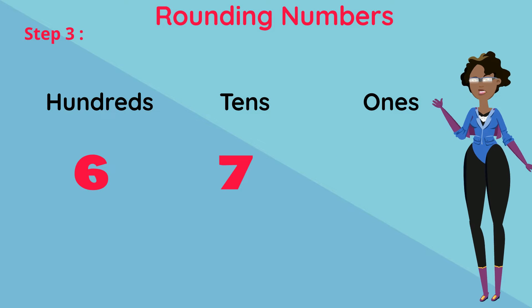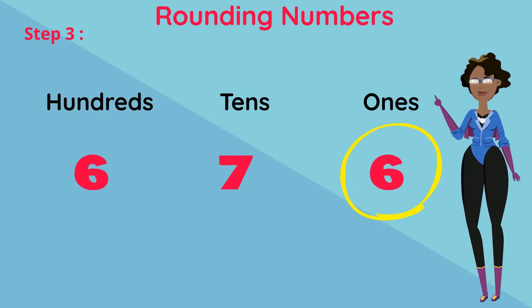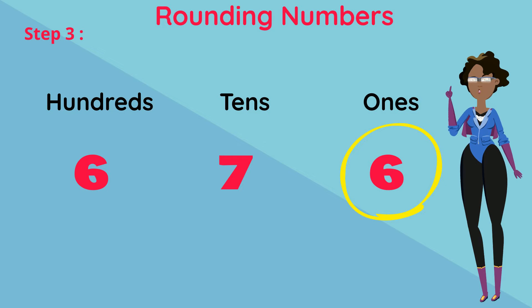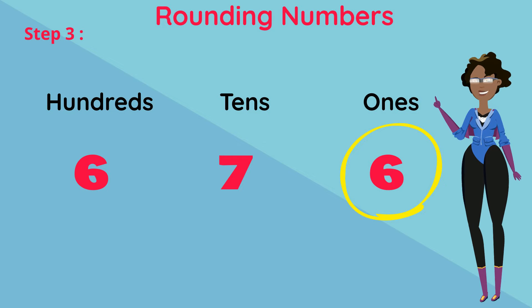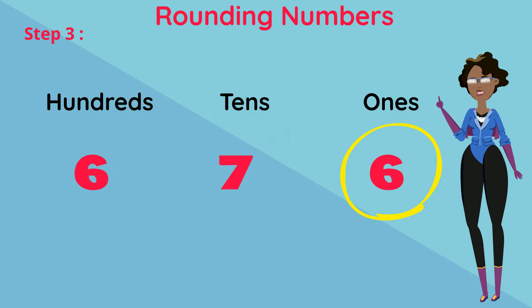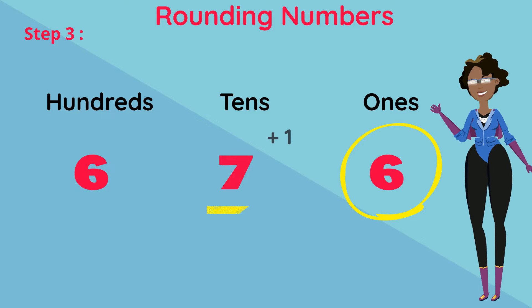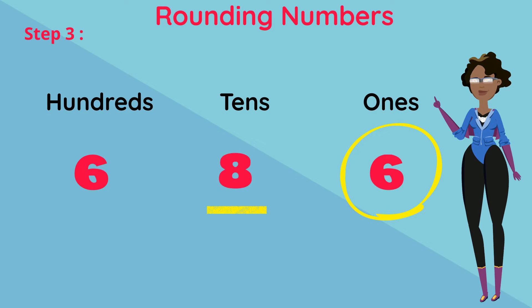If however the 1s digit is 5 or more — meaning 5, 6, 7, 8, or 9 — we add 1 to the 10s digit and write a 0 to replace the 1s digit.